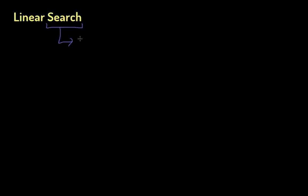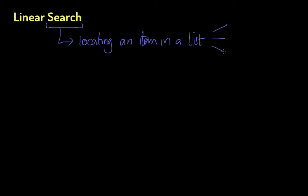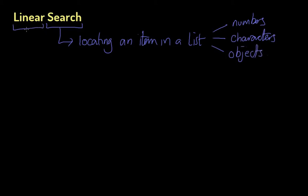Let's talk about linear search. The term 'search' is used to describe the act of locating an item in a list. We all search for our socks in the morning, we all search for the right words to say in a conversation. In a computer science context, we're talking about lists of numbers, characters, letters, punctuation — and maybe even lists of objects in a game as well.